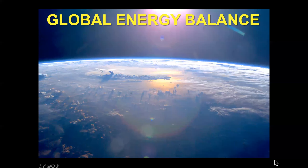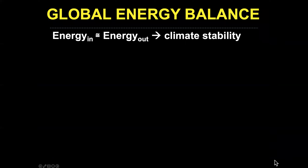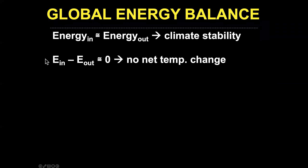The global energy balance: the energy of the earth and what it gets from the sun can be thought of as a budget. Energy in equals energy out — or approximately so — and what you have is climate stability. If what comes in approximately equals what goes out, you have a stable climate. Mathematically, energy in minus energy out should be approximately zero.